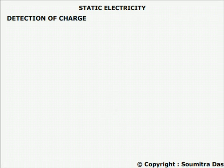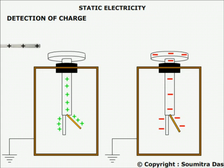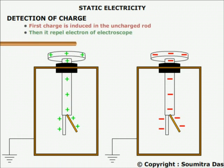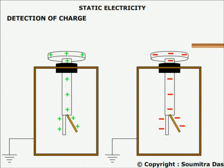For detection of charge, we need two electroscopes charged oppositely — one positively and one negatively. Bring a charged object with unknown charge near the disc of the first electroscope. If the leaf diverges more, the charged object is positively charged because it pulls more electrons from the leaf. If the leaf converges, the object may be negatively charged or uncharged. To confirm, bring the object near the second (negatively charged) electroscope. If its leaf diverges more, the object is negatively charged; otherwise, it is uncharged.